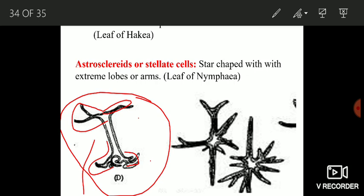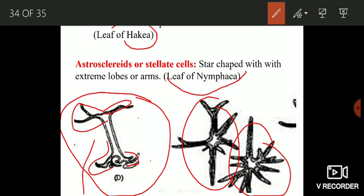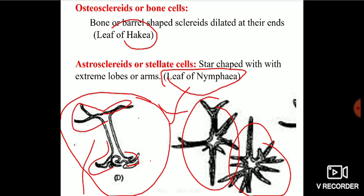And found in the leaves of Hakea. It's a plant. And then we have astrosclereids or stellate cells. These sclereids are star-shaped and they have extreme lobes or arms. Here you can see these are star-shaped cells which are known as astrosclereids. And the example is leaf of Nymphaea. You will find them in the leaves of Nymphaea.